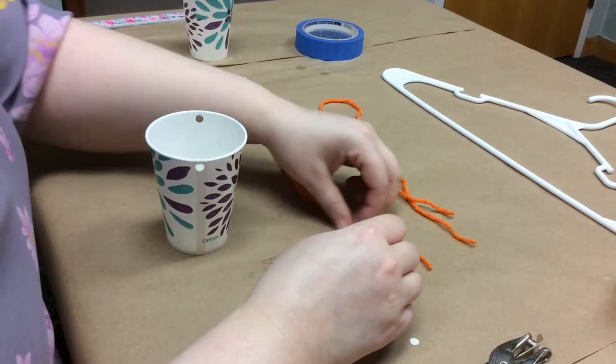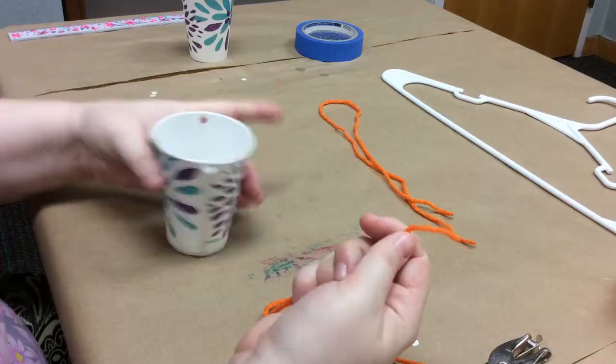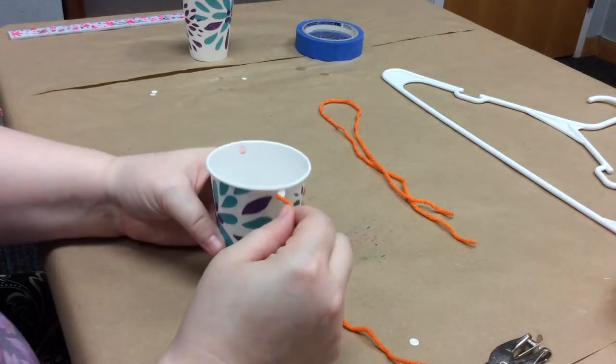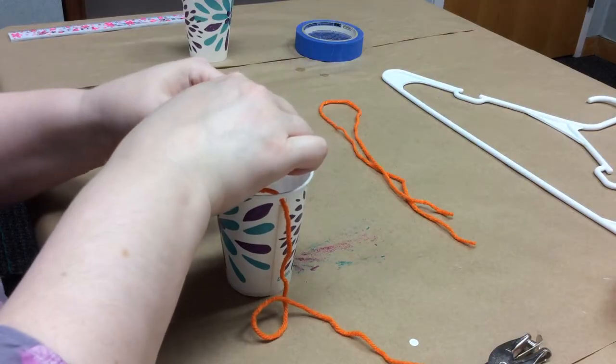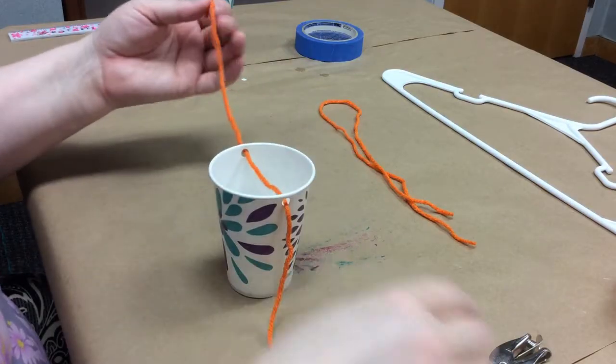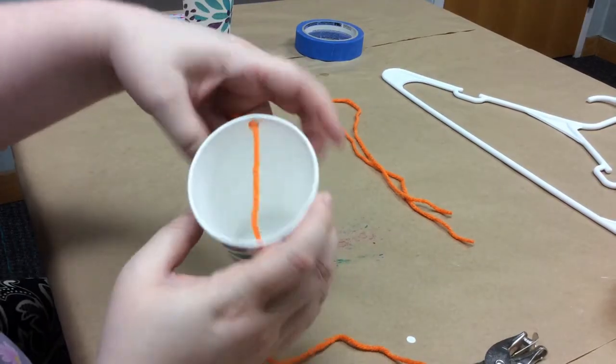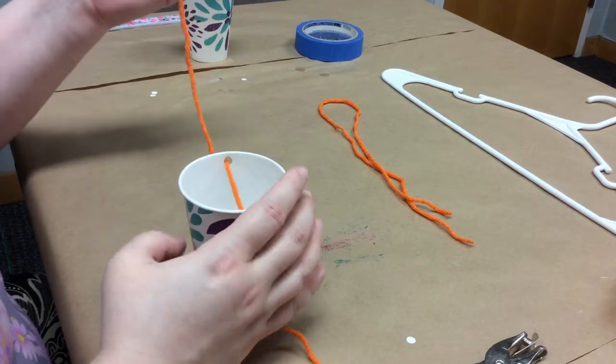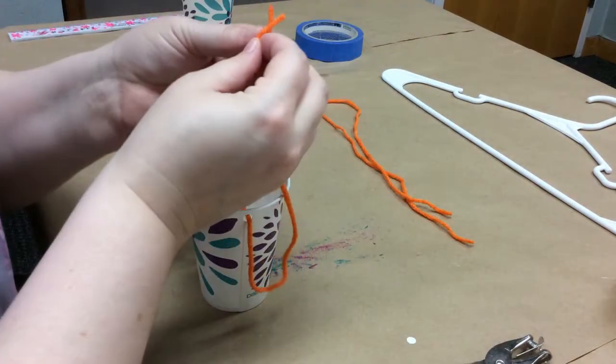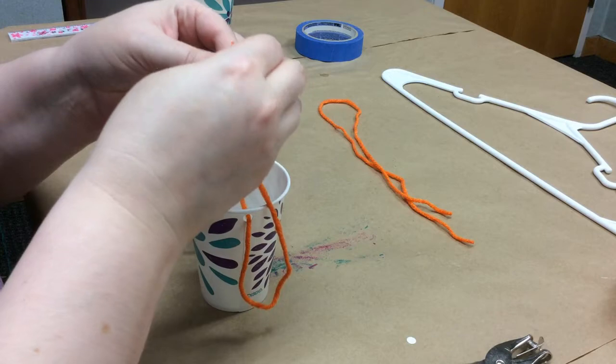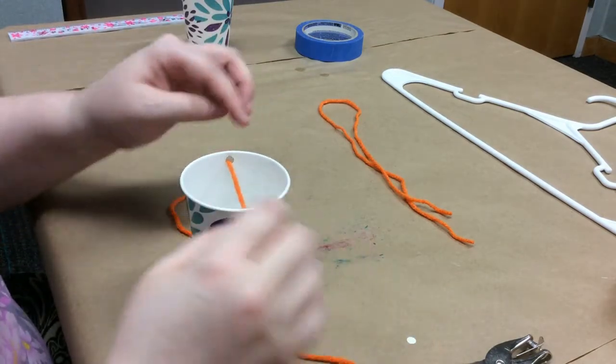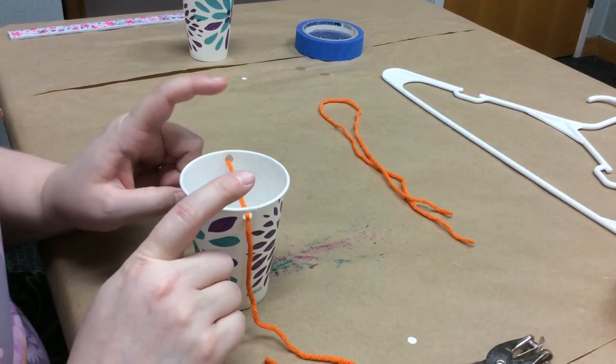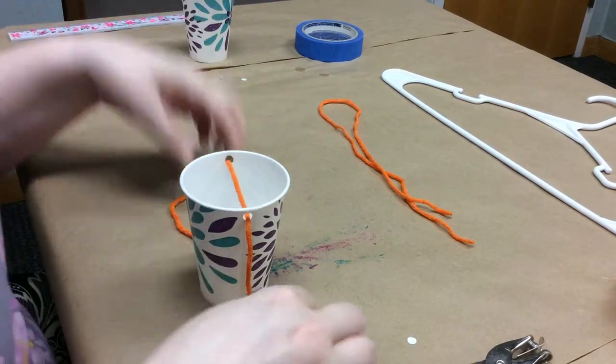So now what I'm going to do is I'm going to thread my string through that hole and then out the other side. So what you're going to have is the string running across your cup and that is okay. This is just the easiest way to do this. There's all different kinds of ways you can do this. You could tie each end around the end. But then that gives you one, two, three, four knots. Whereas if you do it this way, you only have two.